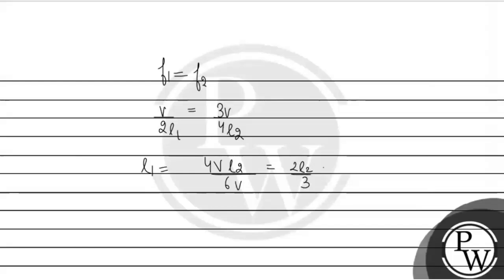Now L2 is 20, so 2 into 20 divided by 3, which is 40 by 3 cm, or that can be written as 13.2 cm.